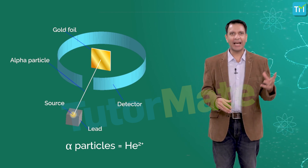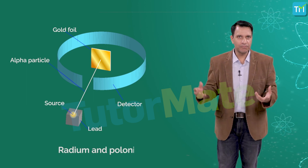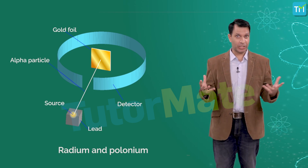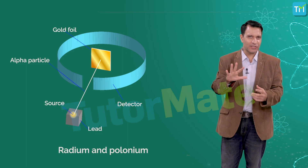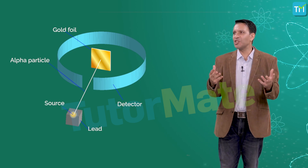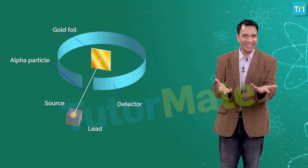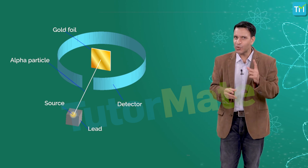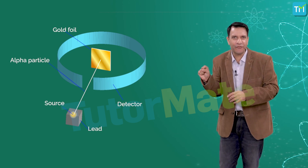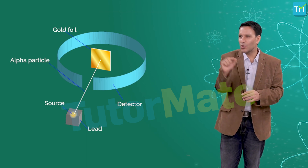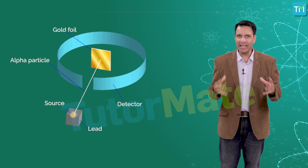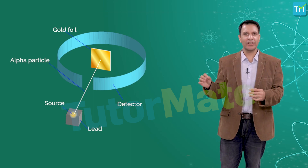Alpha particles are emitted by radioactive elements like radium and polonium. These fast-moving alpha particles have a considerable amount of energy and can penetrate through matter to some extent. The gold foil used was extremely thin — comparable to the thin silver sheet seen on Indian sweets — so fragile it breaks even if you place a finger on it.